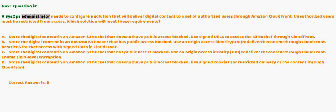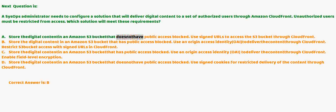Next question: A SysOps administrator needs to configure a solution that will deliver digital content to a set of authorized users through Amazon CloudFront. Unauthorized users must be restricted from access. Which solution will meet these requirements? A) Store the digital content in an Amazon S3 bucket that doesn't have public access blocked; use signed URLs to access the S3 bucket through CloudFront. B) Store the digital content in an Amazon S3 bucket that has public access blocked; use an Origin Access Identity (OAI) to deliver the content through CloudFront.